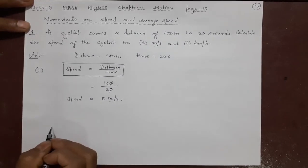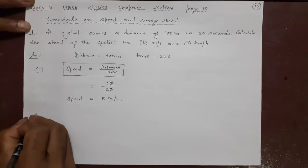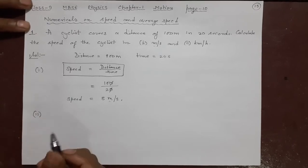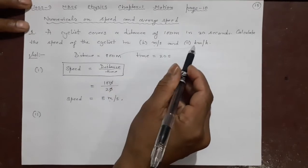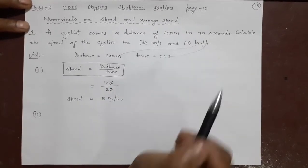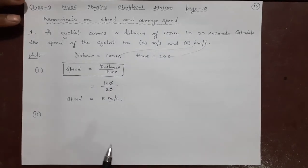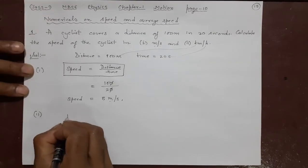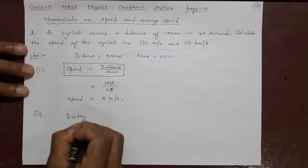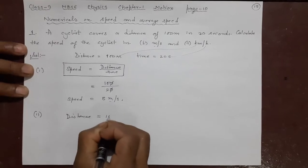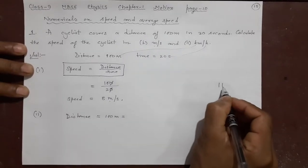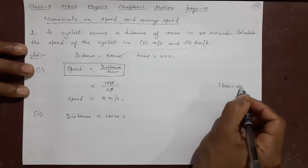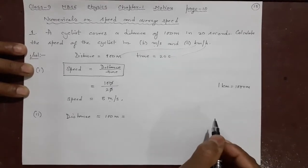Now the second one. The second one has many ways to do but I will do by changing these two. Make it kilometer - meter you make it kilometer, second you make it hour, and then divide them. So how will we do? Distance is 100 meters. You have to remember: 1 kilometer is 1000 meters.